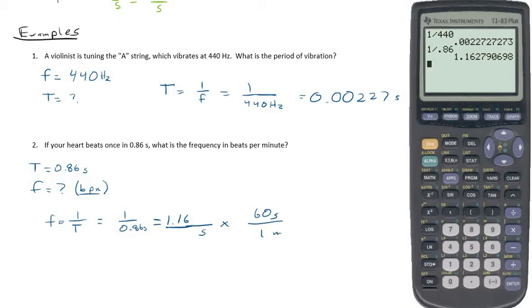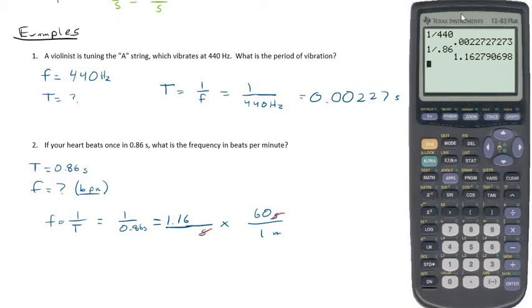This will allow us to cancel out our units of seconds and give us a final answer of 1.16 times 60. So that's 69.7. We now need to express our answer in two sig digs, so we're going to write 70 beats per minute. So the frequency is 70 beats per minute.